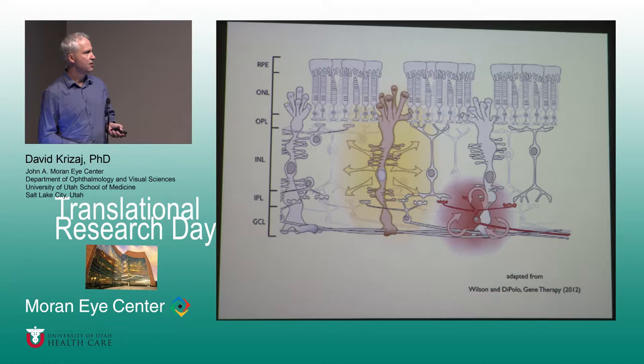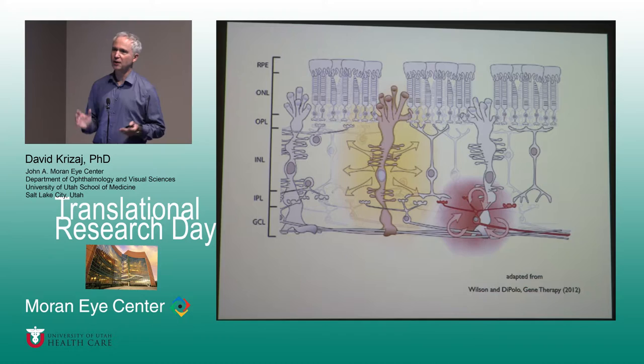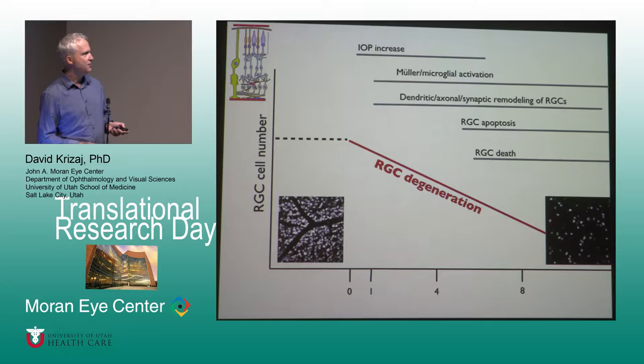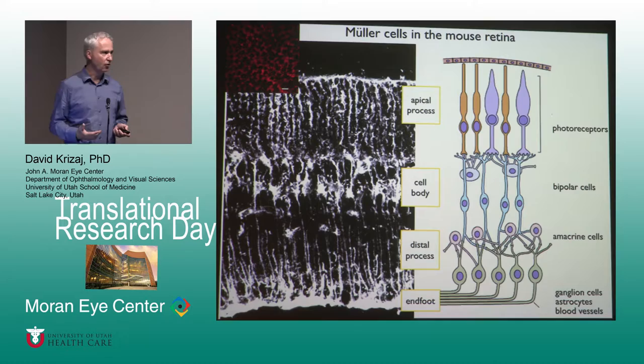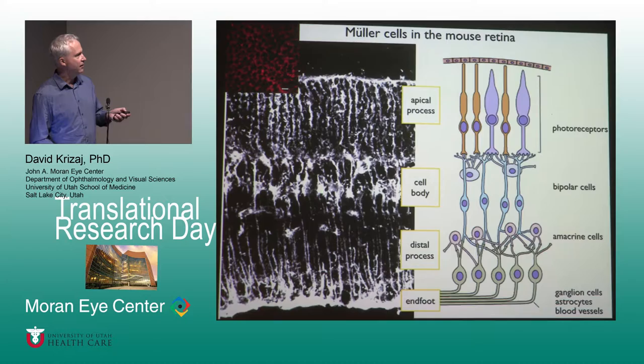The model is: overactivation of the channel leads to calcium overload, which activates calcium-dependent proteases and caspases, leading to cell death — and we have proved that as well. The Müller cells in particular envelop every single retinal neuron and are absolutely essential for every aspect of retinal physiology. What is interesting is that they become activated — the first thing one sees following IOP increase is glial activation together with dendritic and synaptic remodeling. They strongly express TRPV4.